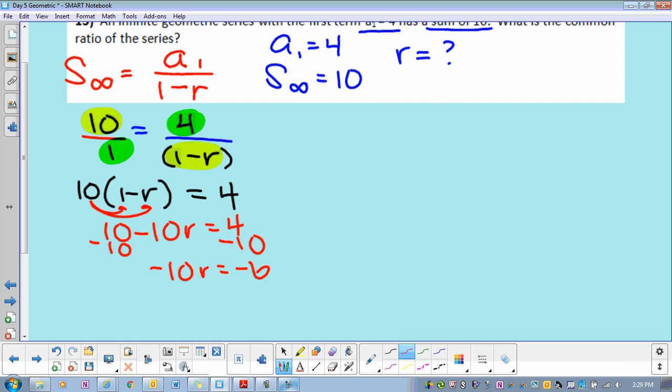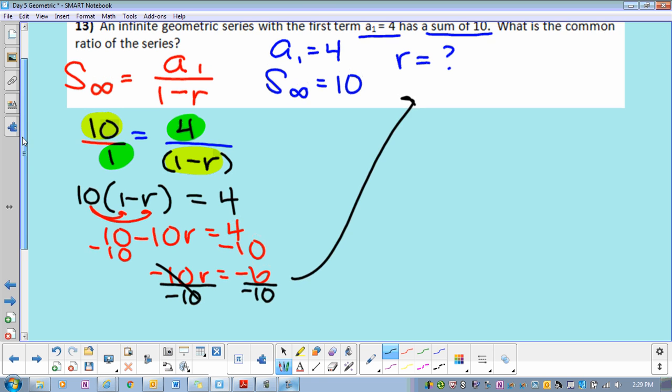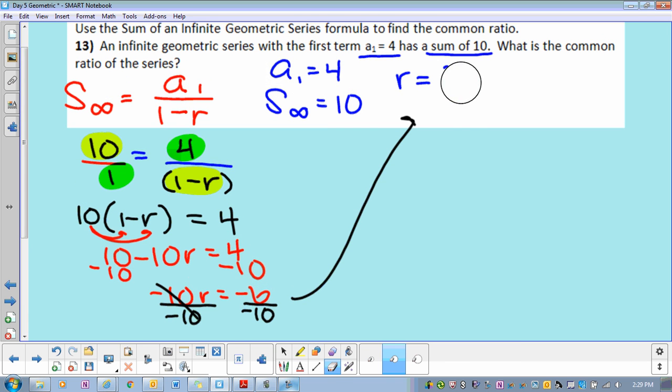How do I solve for this r? What do I have to do? Good. So then what is that? What is negative 6 divided by negative 10 in the fraction? So r equals 3/5. That's not bad, right?